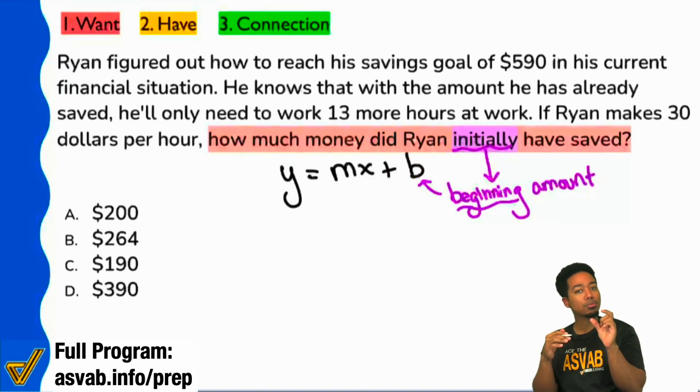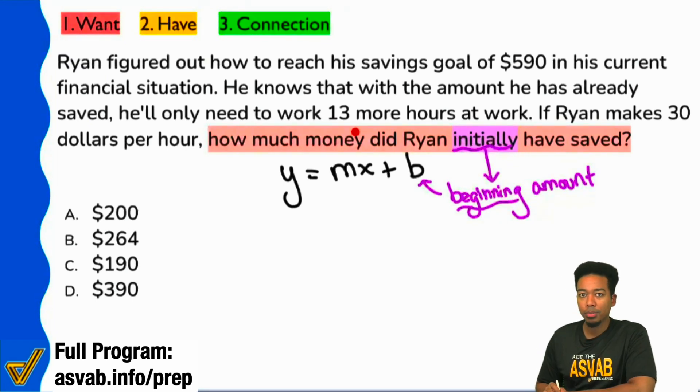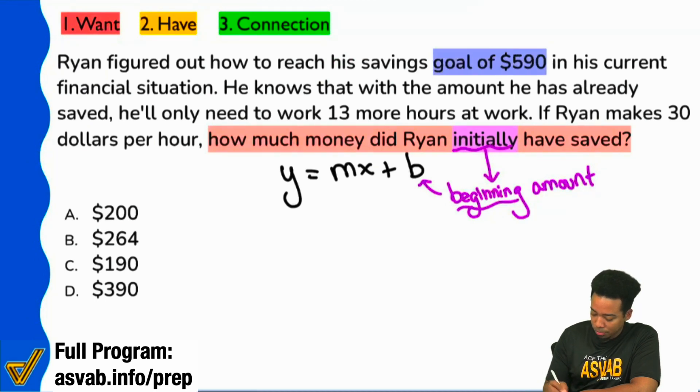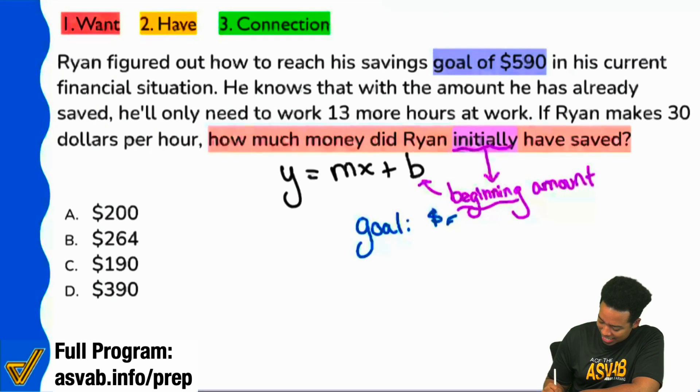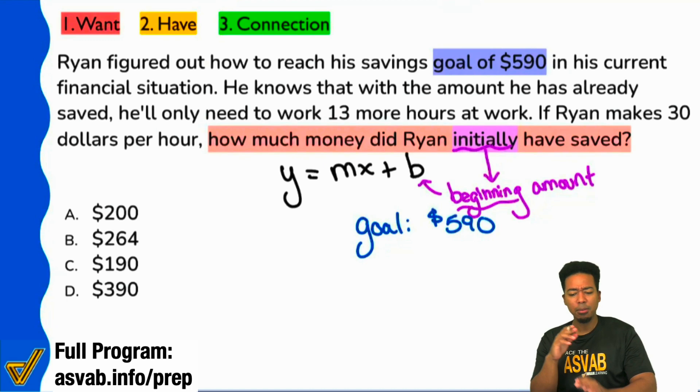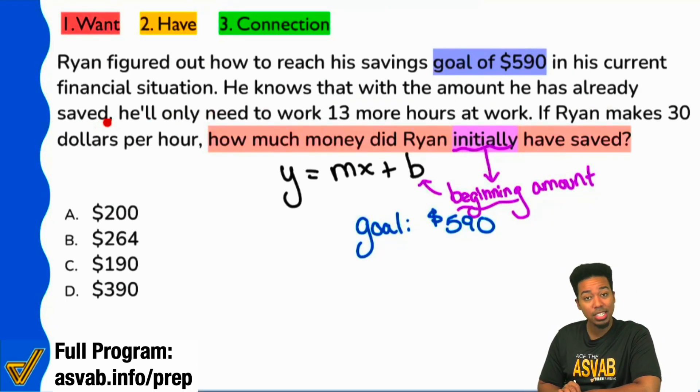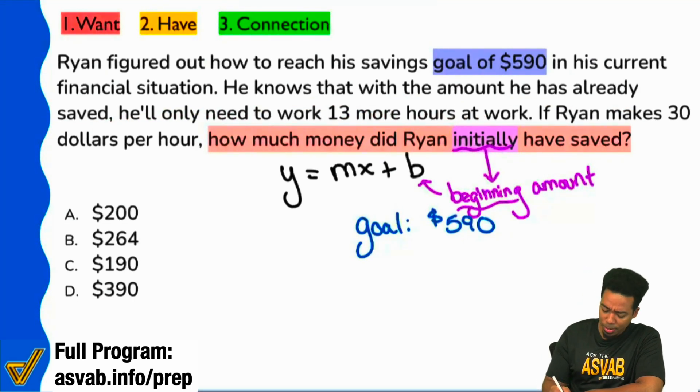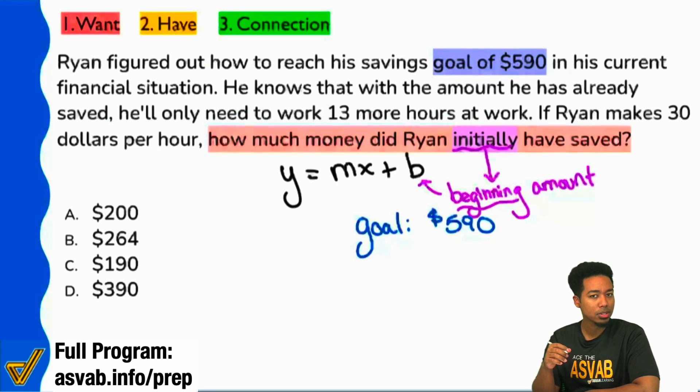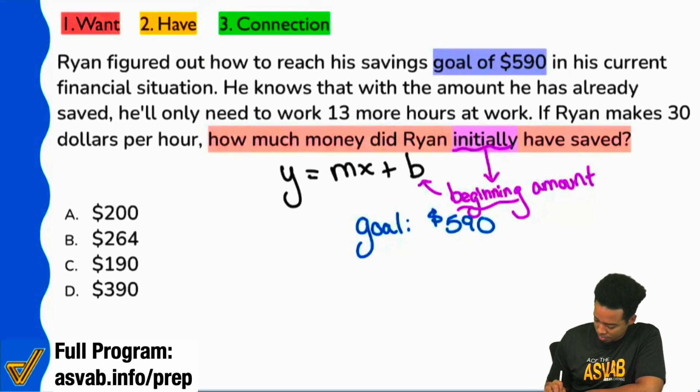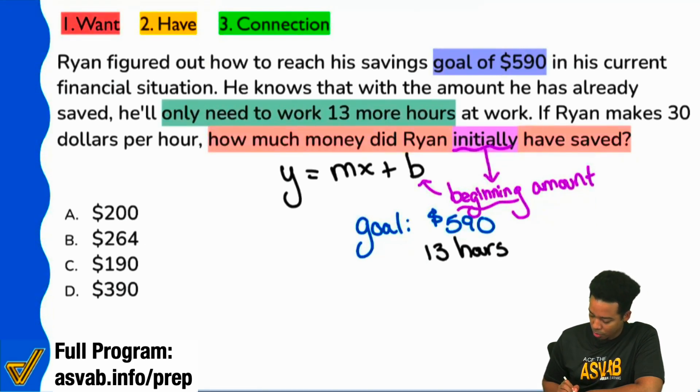Let's read through that again, but now let's pay attention to what the numbers mean. So everyone, he has a savings goal of $590. You don't need to assume that that means anything at all. Just say the goal is $590. That by itself doesn't scream anything at all. Just write that down, no problem. But then up next, we see here that he knows with the amount that he has saved, he'll only need to work 13 more hours. Quick question, what kind of a unit is that?